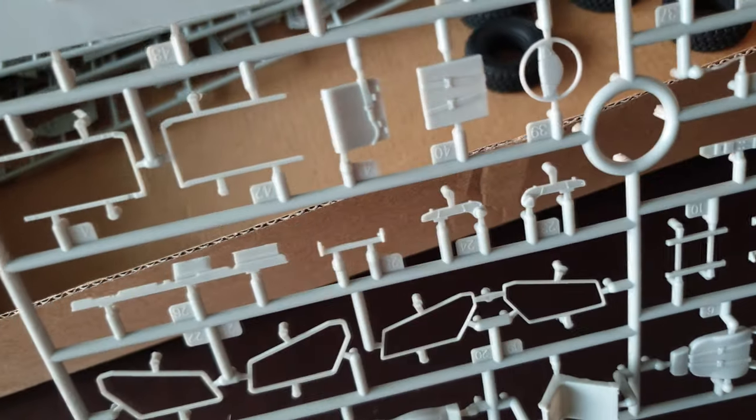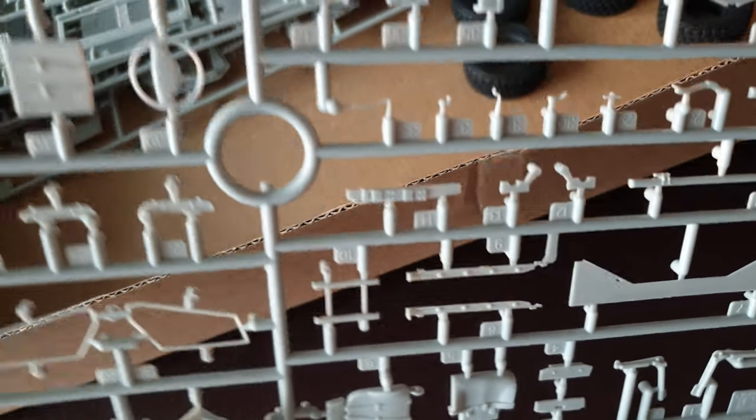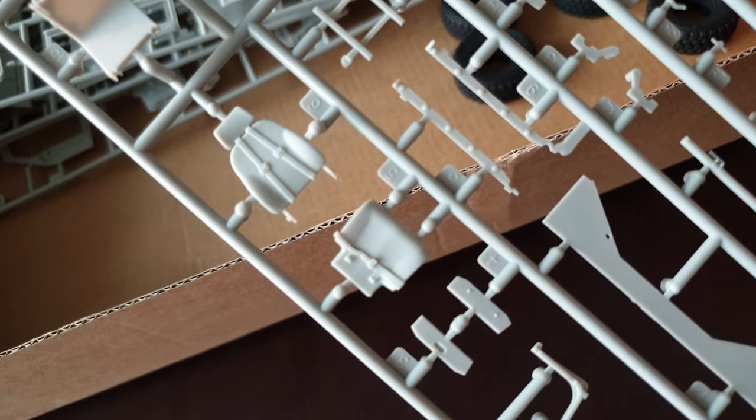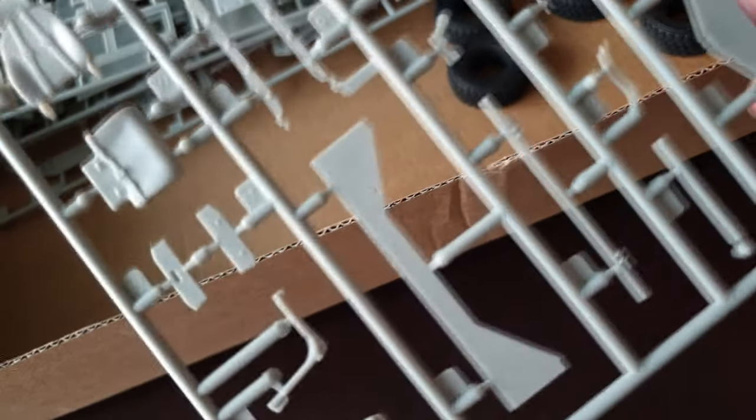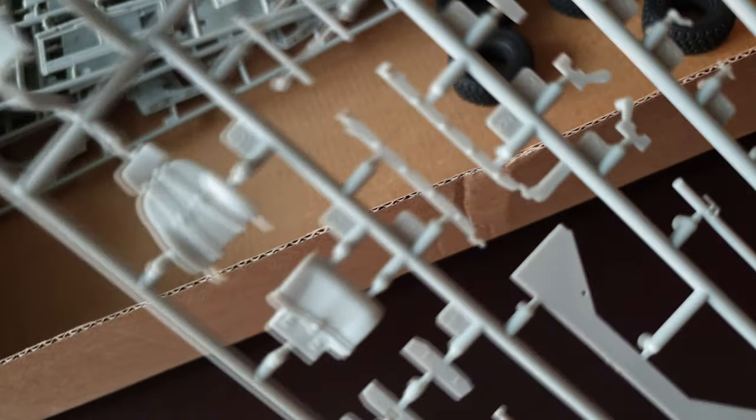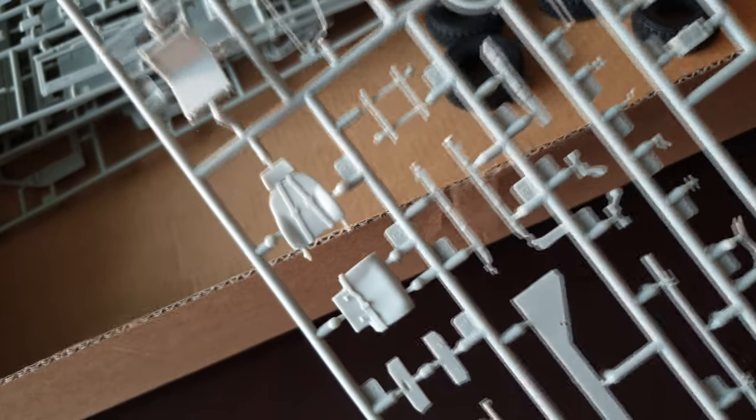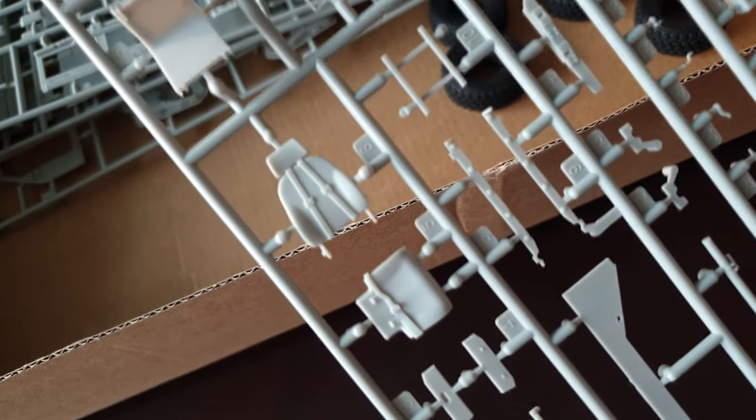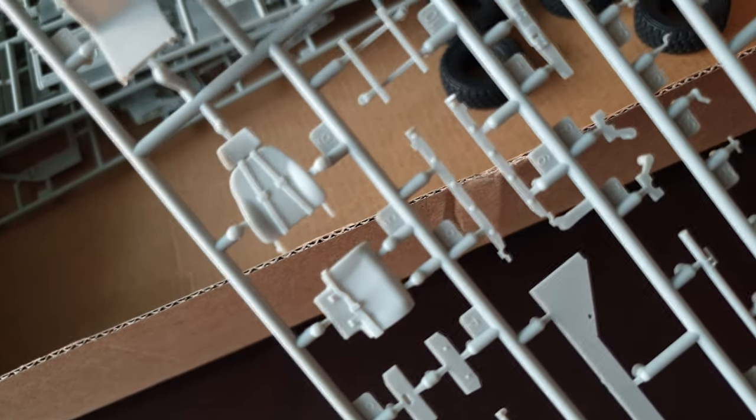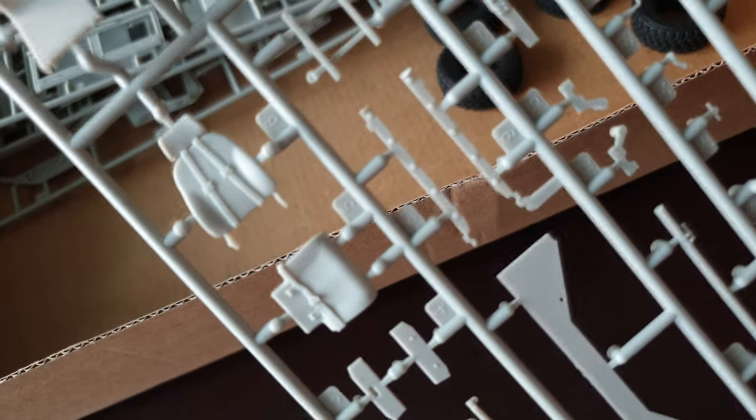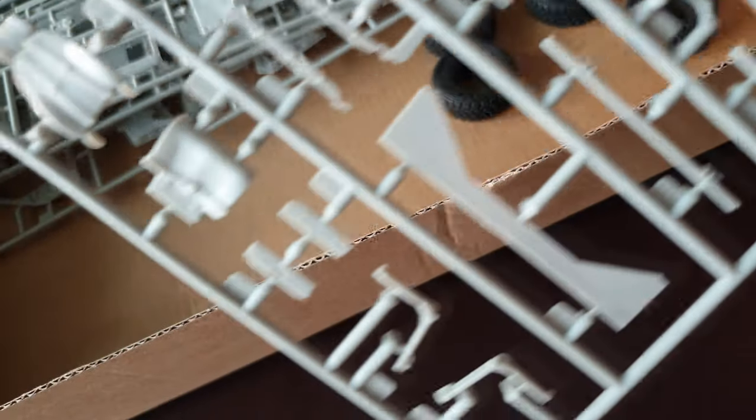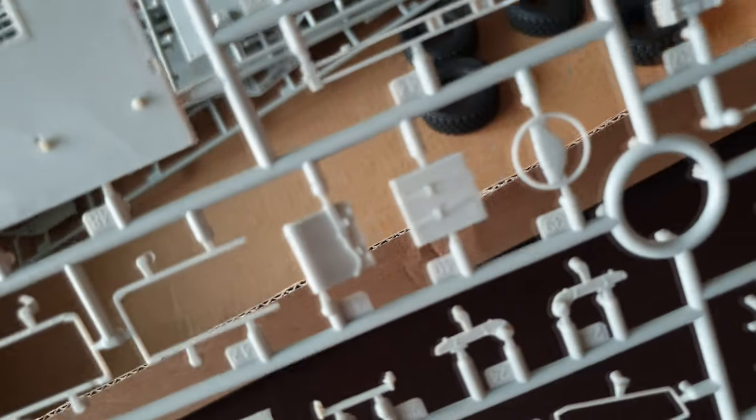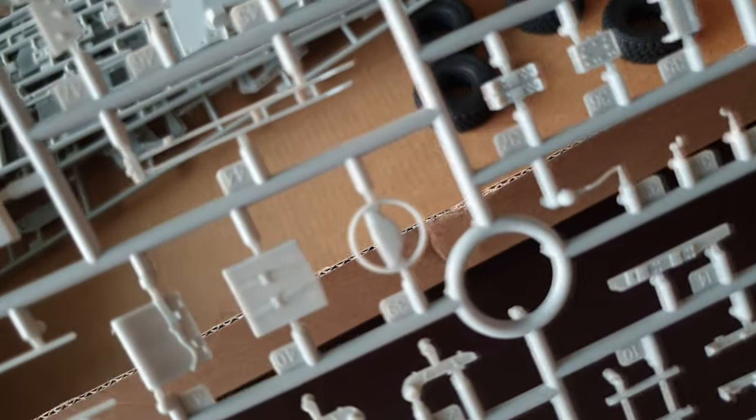Just note here you can see the seats there, they've got molded on shoulder harnesses. Nothing really wrong with that, you can scrape them off, you can build your own. They're not in PE, I prefer them like that to be honest for what they are. There's a steering wheel there.